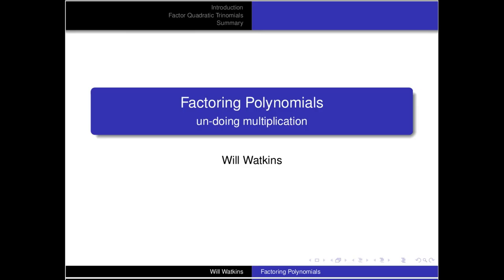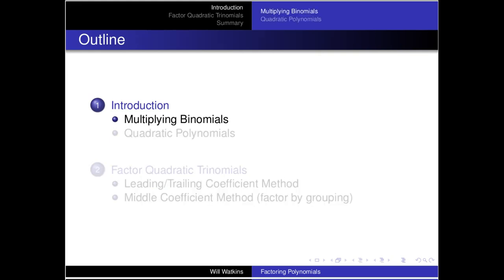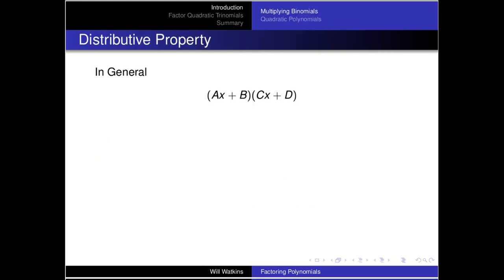In this video we're going to look at some aspects of factoring polynomials. The big point is that factoring is undoing multiplication. Here's the outline: we'll look at multiplying binomials that produce quadratic polynomials, then we'll look at factoring those quadratic trinomials using two different methods. First, let's look at multiplying binomials in detail, because factoring is undoing this process.